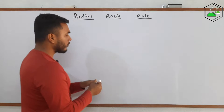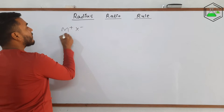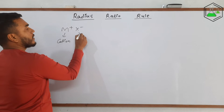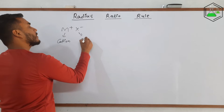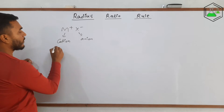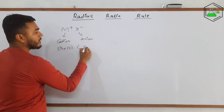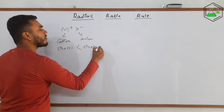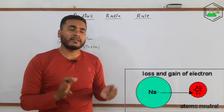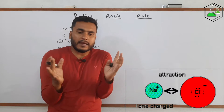To understand about the Radius Ratio Rule, let us take an ionic compound M⁺X⁻, where M⁺ is the cation having positive charge, and X⁻ is the anion having negative charge. We know that the size of the cation is always less than the size of the anion. To form a cation, M has to lose one electron, and as a result, the force of attraction between the electrons and the nucleus will increase and the size decreases.